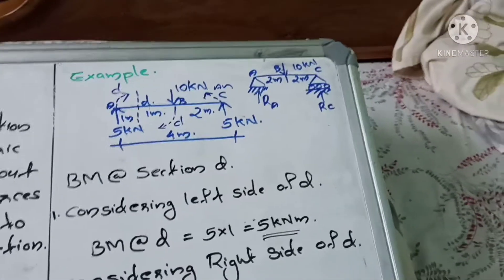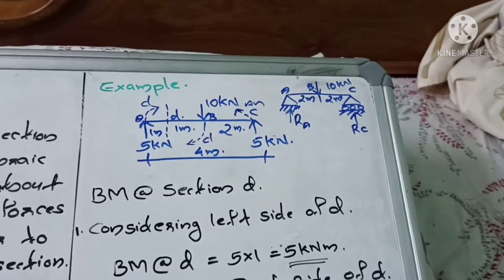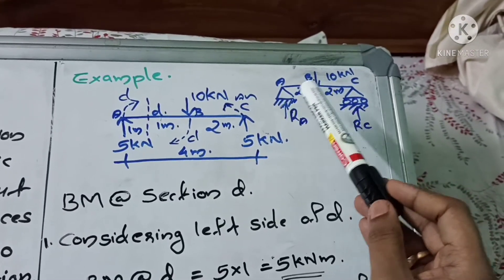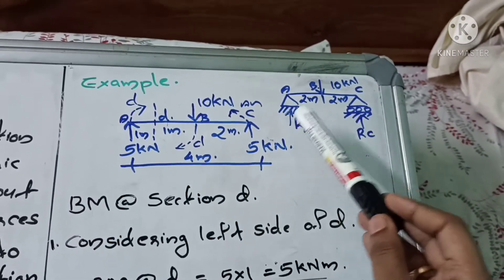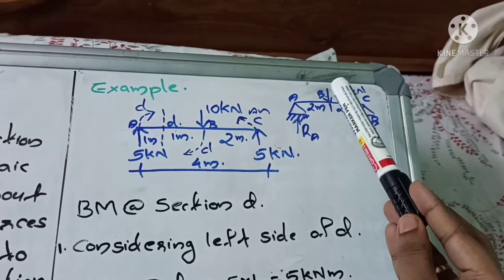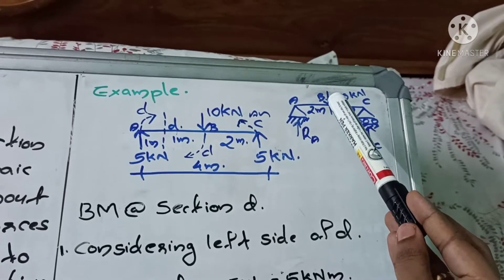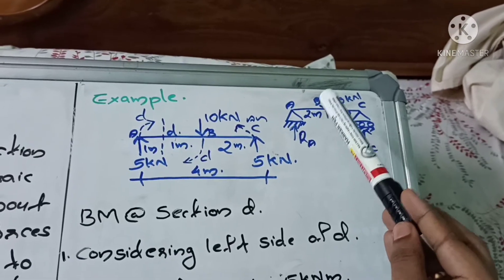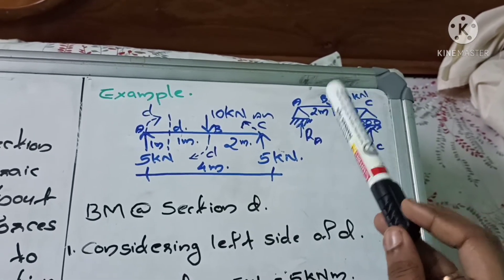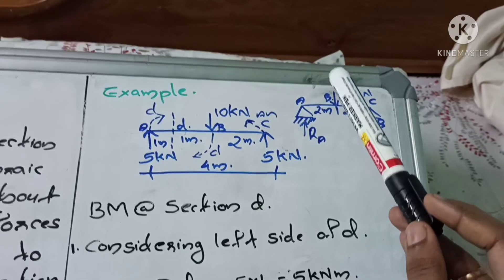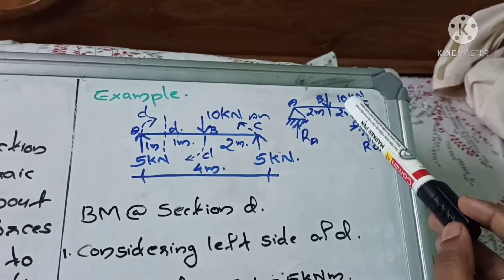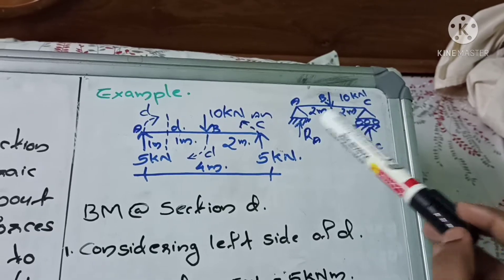Example: ABC is a simply supported beam. A hinge support is provided at A and a roller support is provided at C. A load of 10 kN is acting at the center of the beam, that is at B. Since the load is acting at the center, the reaction forces R_A and R_C are equal to 10 divided by 2, that is 5 kN.